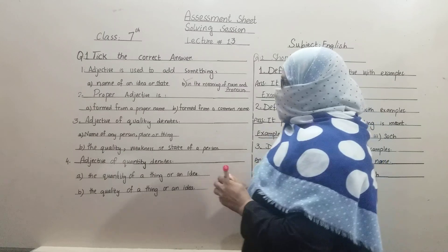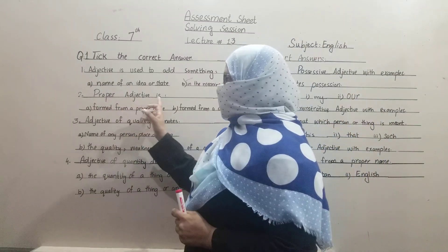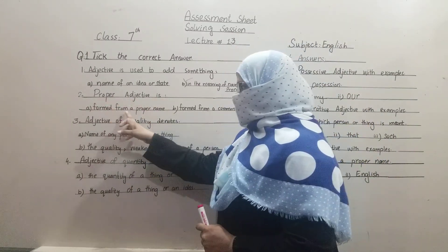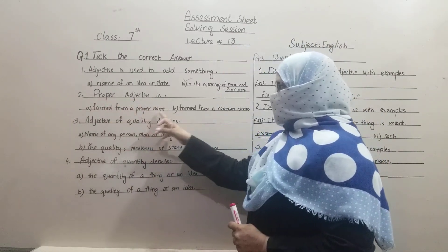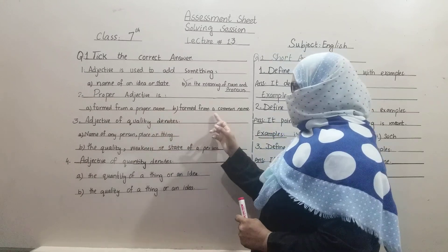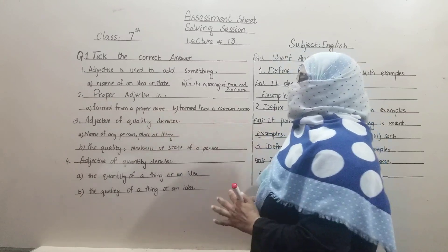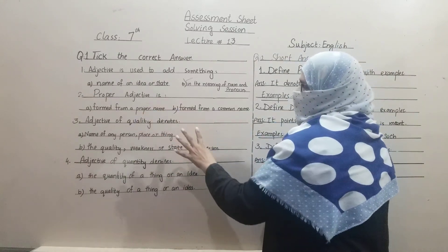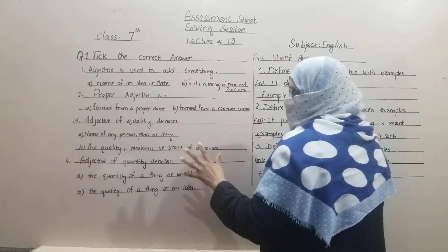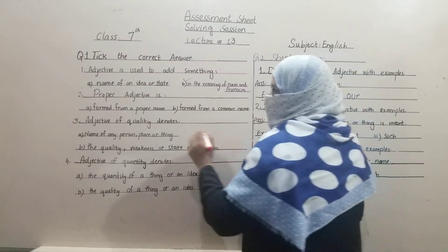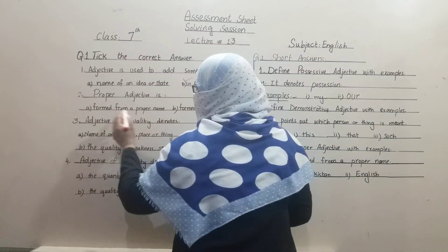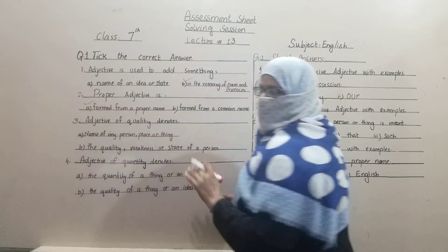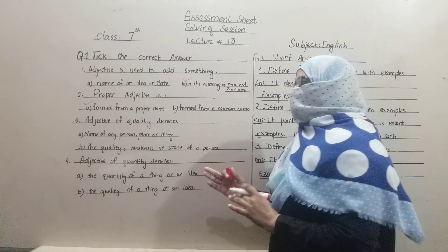Second MCQ — proper adjective is: Option A: formed from a proper name. Option B: formed from a common name. The correct answer for proper adjective is formed from a proper name.